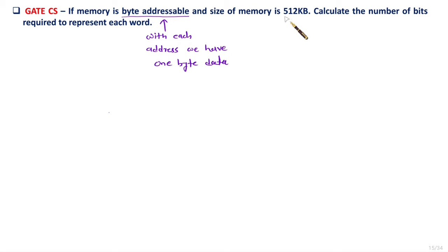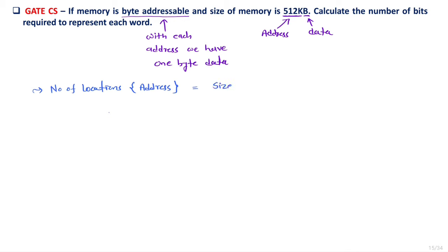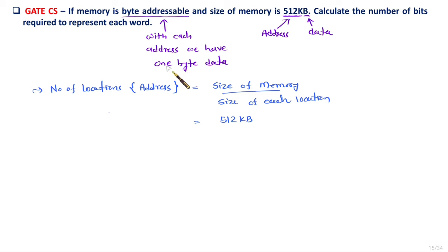We need to identify how many locations there are. Number of locations equals size of memory divided by size of each location. Size of memory is 512KB, and since it is byte addressable, size of each location is 1 byte. So this B and this B get cancelled, and you will have 512K number of locations.